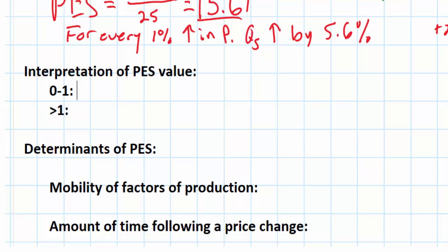Therefore, the number of seats in a football stadium might be limited to, say, 60,000, no matter what the price of tickets are. But for most goods, there is a direct relationship between price and quantity, and the PES coefficient will therefore be something greater than zero.